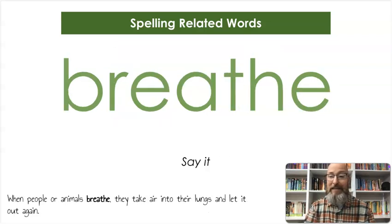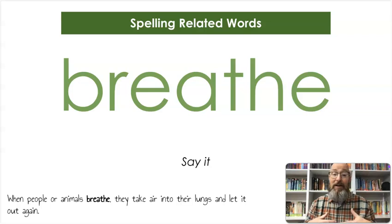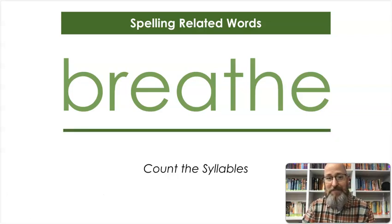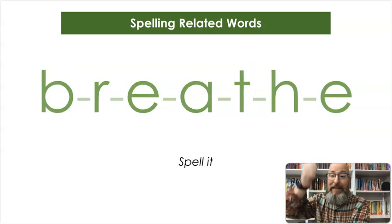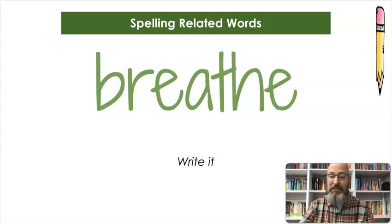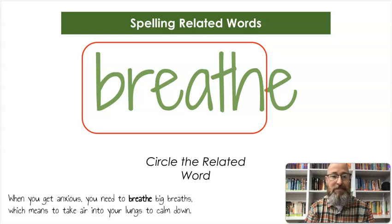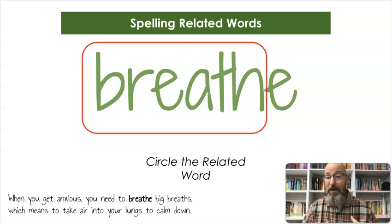Our next word is breathe. When people or animals breathe, they take air into their lungs and let it out again. Count the syllables — breathe. Let's spell it: B-R-E-A-T-H-E, breathe. And let's write it: B-R-E-A-T-H-E. We're not circling the whole word — we're just circling that part: breath. But it's pronounced differently now. When you get anxious, you need to breathe big breaths, which means to take air into your lungs to calm down.